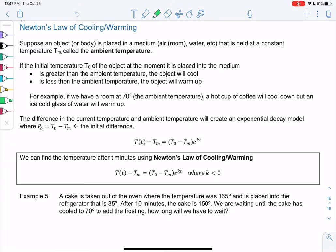So suppose we have an object or body and we place it in a medium. So we're going to place it in a room, water, the refrigerator. That's held at a constant temperature called the ambient temperature. If the initial temperature of the object, T0, at the moment it's placed into the medium or the room, is greater than the ambient temperature, the object will cool. And if the temperature is less than the ambient, then it'll warm up.